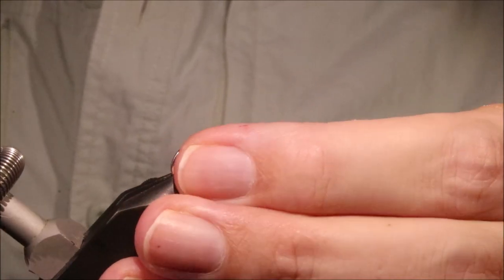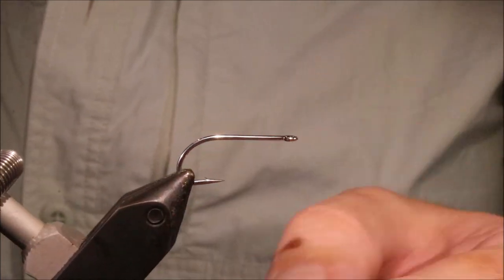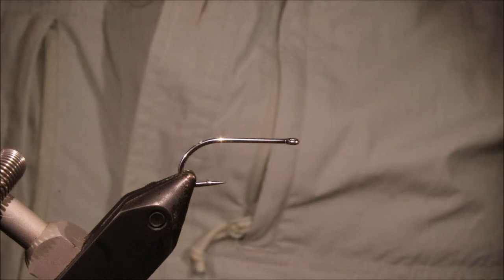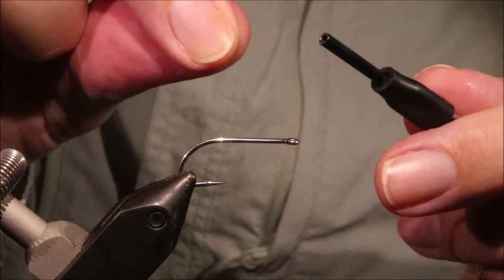It's a fantastic pattern. Obviously it's a bonefish fly but it certainly will work for other species on the flats as well. Triggers will eat it, trevally will eat it. I know people have caught permit on them as well.